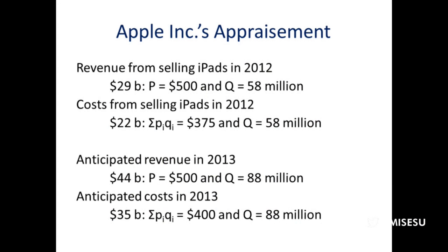The last thing we'll cover is how this process of appraisement moves from consumer goods to producer goods. I looked this up — Apple's revenue from selling iPads in 2012: 58 million units at a simplified price of $500, giving about $29 billion in revenue. From a teardown in Wired Magazine or a similar publication, the sum of the price of each component — the screen, the chip, and so on — comes to $375 per unit average cost. Over 58 million units, that gives $22 billion in costs, so they earn roughly $7 billion on an investment of $22 billion.